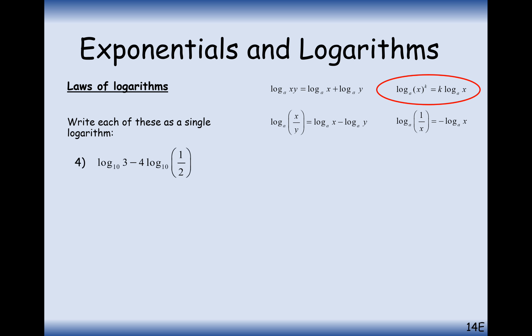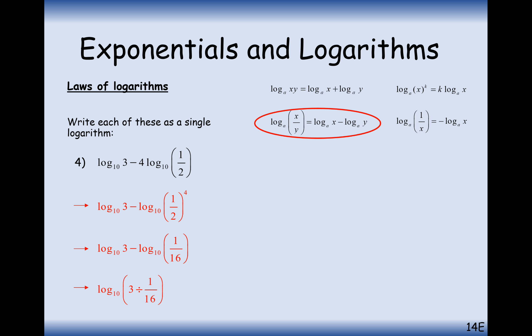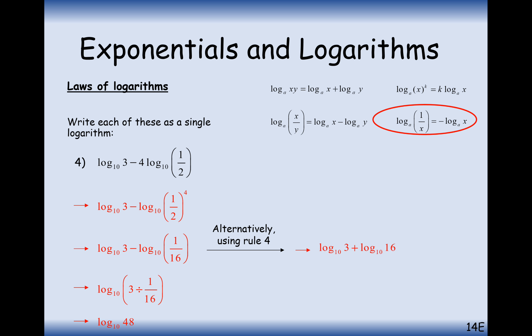Let's look at some more complicated ones. First, sort out the 4 at the front by bringing it in as a power: 1 half to the power of 4, which is effectively 1 over 16. Now we can divide the logs by subtracting them: 3 divided by 1 over 16 is the same as 3 times 16, giving log base 10 of 48. Alternatively, you could pull out a negative 1 from the power, bring it to the front, double-negative to make it positive, and simplify to log base 10 of 48. Same answer both ways.